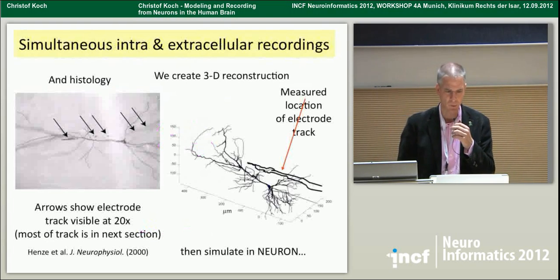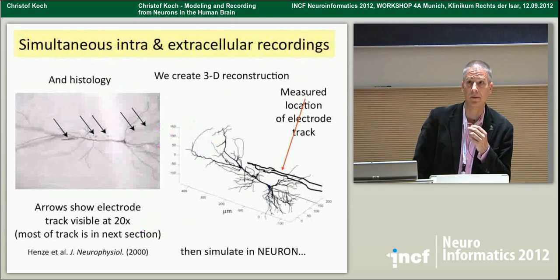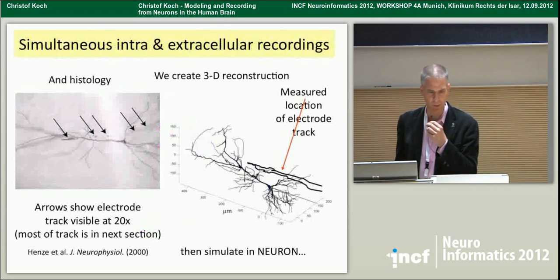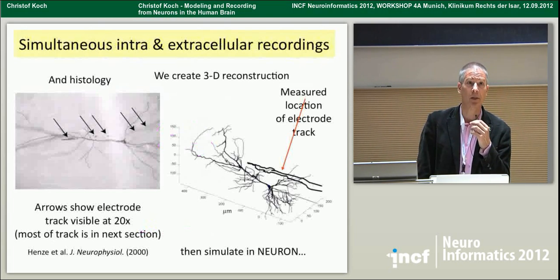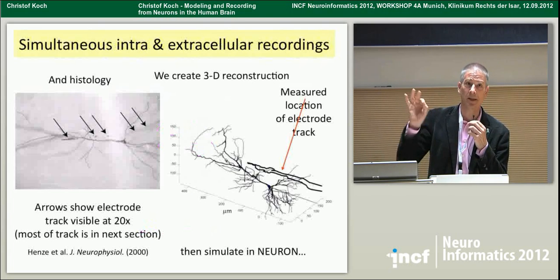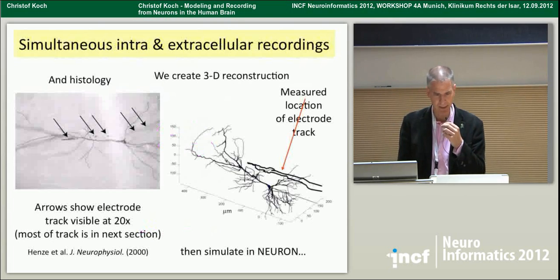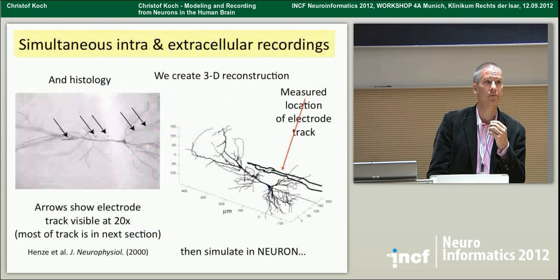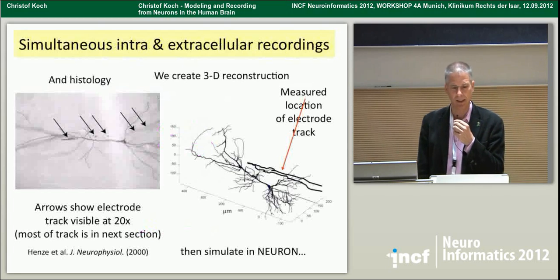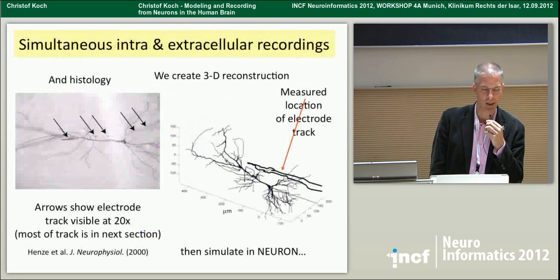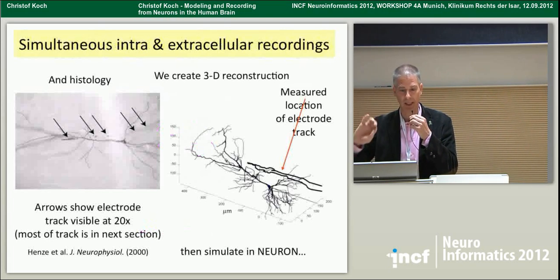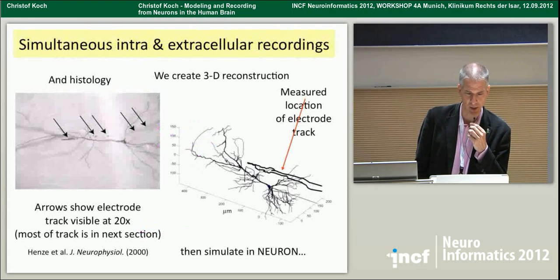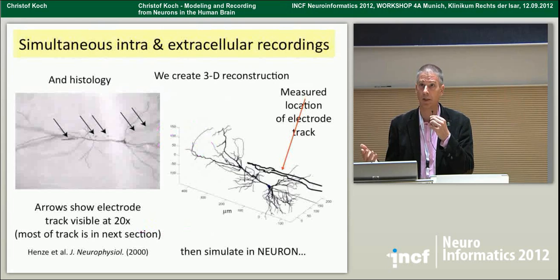One of the first things we were interested in was the exact quantitative relationship between the intra- and extracellularly recorded action potential. There are literally thousands of published studies where people record extracellular action potentials, but it might shock you to realize there is no common definition of what is meant by an action potential. At Caltech, seven different labs doing extracellular recording in various animals were all using different algorithms to go from the electrical field to an action potential. People are more likely to use each other's toothbrush than to use each other's algorithm.